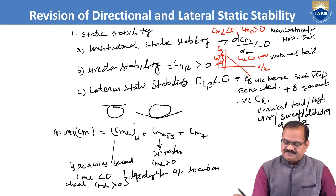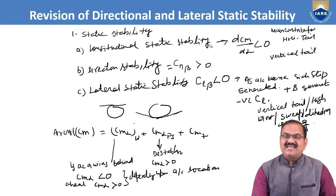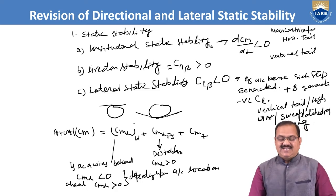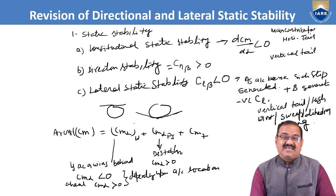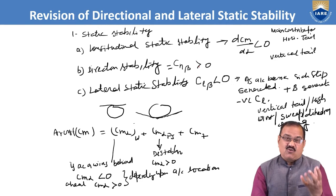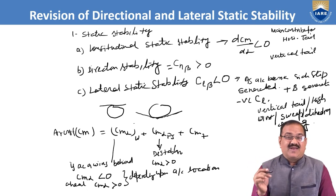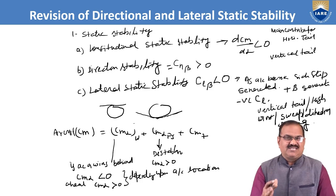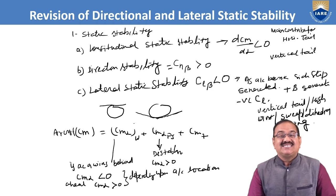Next, we discussed directional static stability. In directional static stability, the condition is that Cn_beta should be greater than 0. Cn is the coefficient of yawing moment; if this coefficient varies with sideslip angle beta such that positive beta gives positive Cn and negative beta gives negative Cn, we say the aircraft is directionally stable.